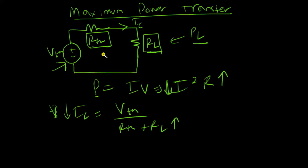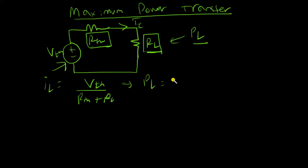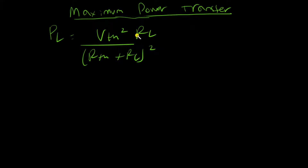The current should not go very low, but resistance should increase so that the power becomes maximum. To find what value of RL gives maximum power transfer, let's use calculus. The current through RL is IL = V_thevenin / (R_thevenin + RL), and the power is PL = IL² · RL, which gives PL = V_thevenin² · RL / (R_thevenin + RL)².